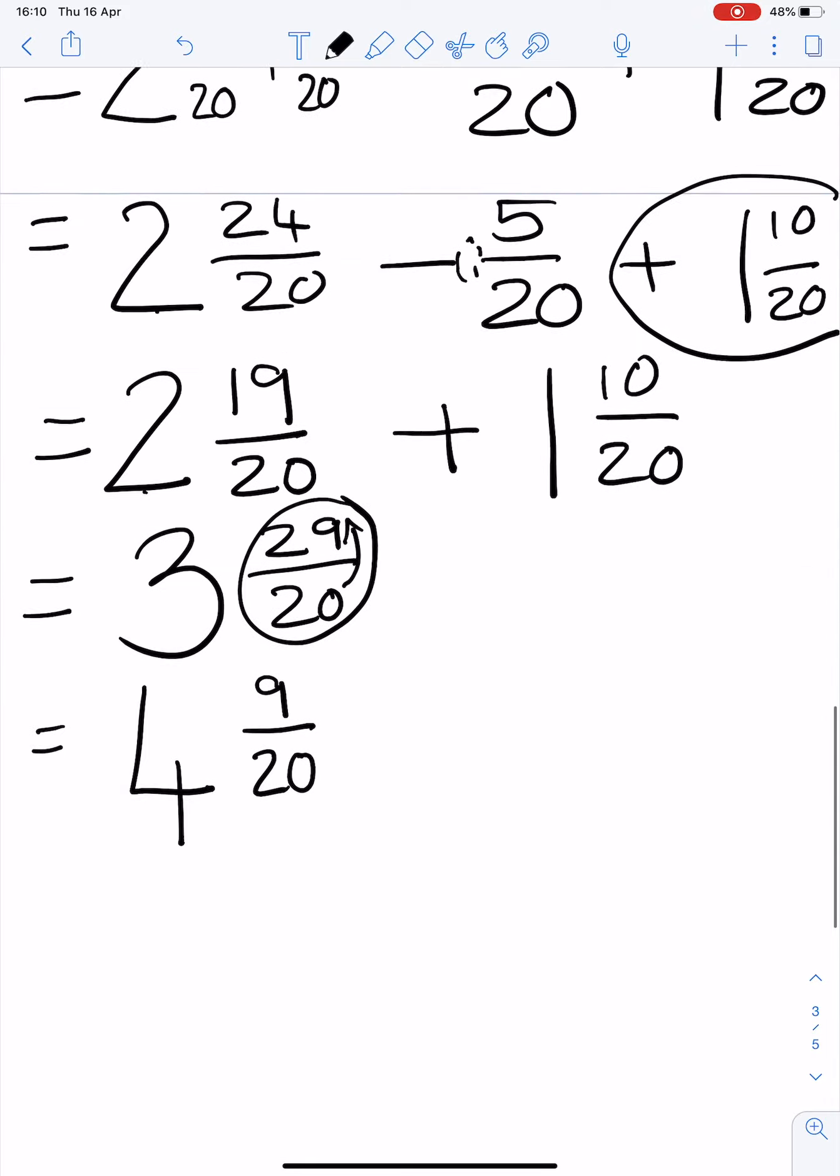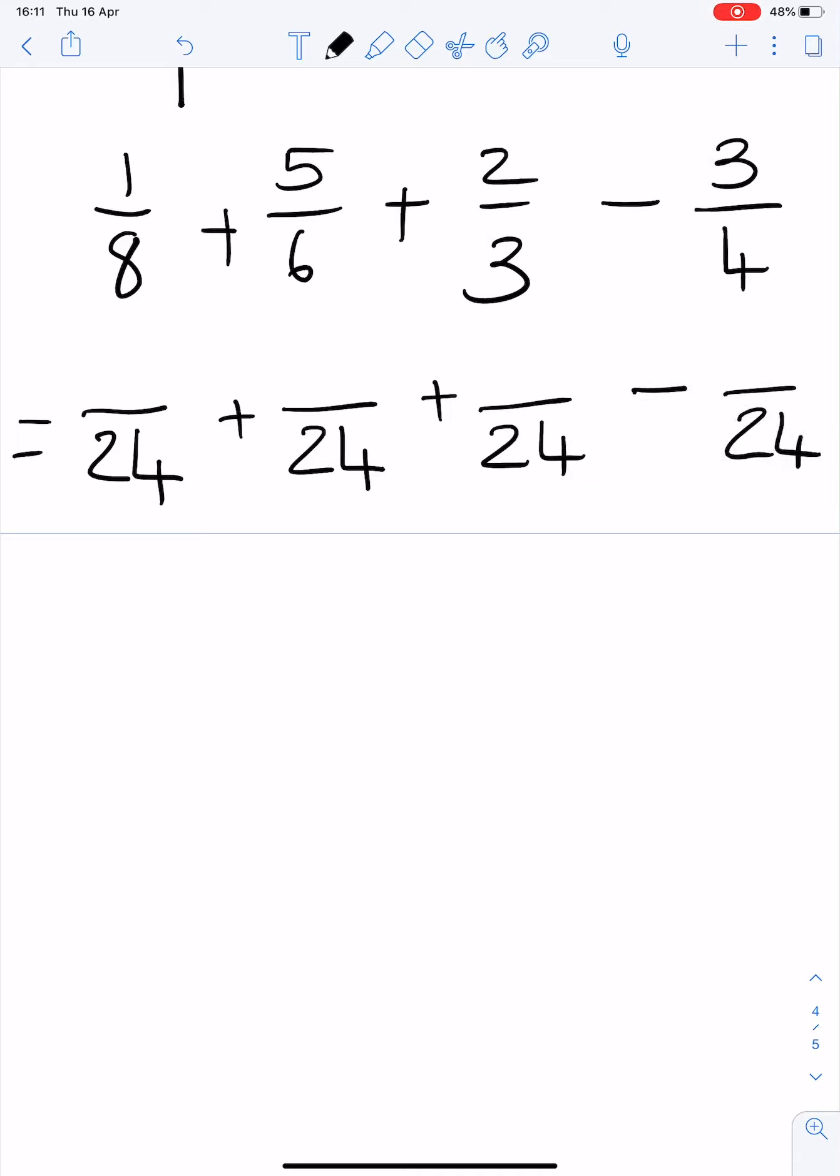Last one. I hope you're still with me. ⅛ + ⅚ + ⅔ - ¾. All different denominators, so we need to find something that all of these numbers fit into. 8 fits into 24, so does 6, so does 3, and so does 4. So I'm going to choose 24 as my denominator.